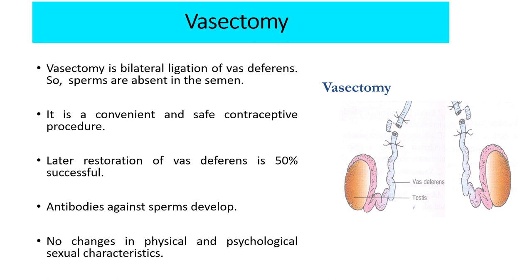Vasectomy is a surgical procedure for male sterilization or permanent contraception, involving bilateral ligation of the vas deferens, so sperms are absent in semen. However, immediately after vasectomy, sperms may still be present beyond the ligation, so vasectomized patients are advised to follow other contraceptive methods. Sperms may be absent only after about 30 ejaculations. It is a convenient and safe contraceptive procedure. Later restoration of vasectomy is 50% successful. Antibodies against sperms may develop, but there are no changes in physical and psychological sexual characteristics.